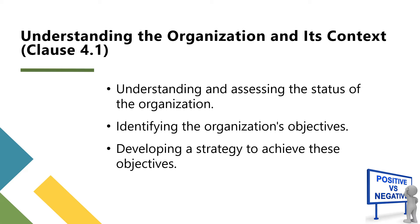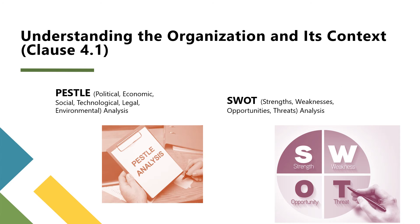We need to consider both internal and external issues that can affect the food safety management system's performance, positively or negatively. This includes understanding the organization's purpose, structure, and potential challenges. Tools such as SWOT analysis and PESTLE analysis can be particularly useful here. SWOT helps in identifying internal strengths and weaknesses as well as external opportunities and threats, while PESTLE provides a framework for analyzing external macro-environmental factors.